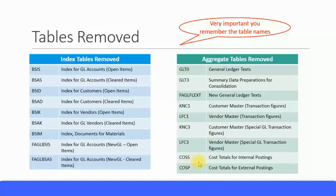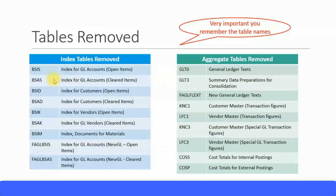For example, COSS is for cost totals for internal postings, COSP for external postings, and so on. Especially if you plan to sit for the Simple Finance certification, you need to know these table names. In the certification exam, they will not simply give the description of the table — they might actually give the ID of the table. So you must know what these tables mean. It's not too difficult to remember; just go through this many times and you'll be able to master the table names.